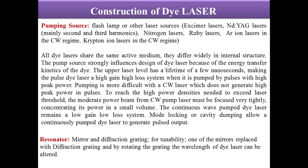We use CW lasers with moderate peak powers, focused very tightly to concentrate power in a small volume. For the resonator, in general cavities are formed of two mirrors — one perfectly reflecting and one partially reflecting. But in this case, one mirror is replaced by a diffraction grating. This diffraction grating is mainly used for tunability: by rotating the grating, the wavelength of the dye laser can be altered, which is why we call the dye laser a tunable laser.